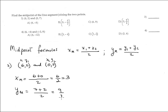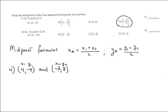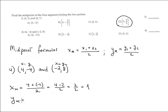The midpoint has coordinates (3, 9) over 2, and that corresponds with option D. For number 4, also a midpoint formula: X of the midpoint equals 4 plus negative 2 over 2, which is 4 minus 2 over 2, that's 2 over 2, equals 1. And Y of the midpoint is the sum of the Y values: negative 4 plus 8 over 2, that's 4 over 2, equals 2. Therefore the midpoint is the point (1, 2), which is option C.